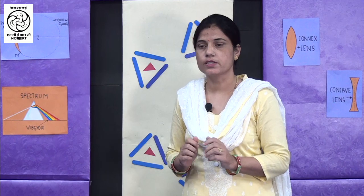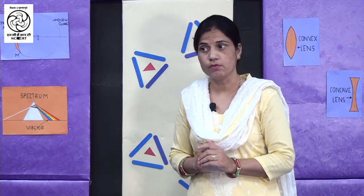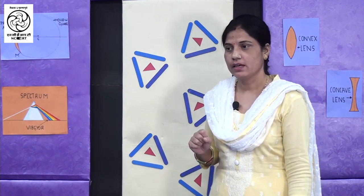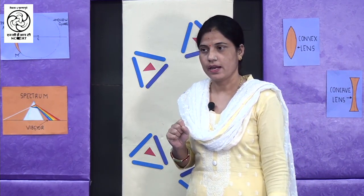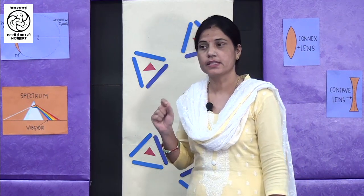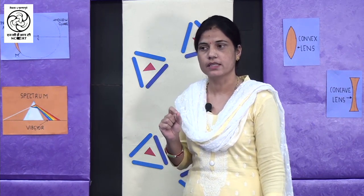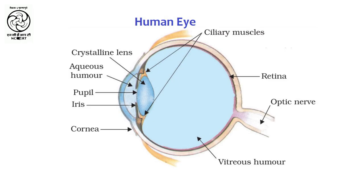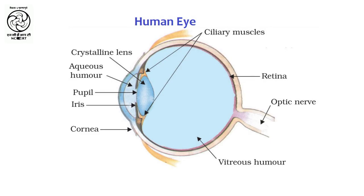Absolutely correct. We can detect the position of objects accurately using both eyes. Two eyes also give a wider field of view. Now tell me, have you seen a camera? Yes, ma'am. What did you observe in it? We observed a lens in it. Right. Similar to a camera, in the human eye there is also a lens system. It consists of a light-sensitive screen where the image is formed, known as the retina. The eye has an eye wall which is approximately spherical, with a diameter of about 2.3 cm, whose outer surface carries a transparent bulge known as the cornea. Most of the refraction of light occurs at this outer surface.